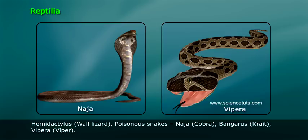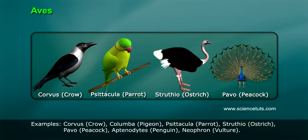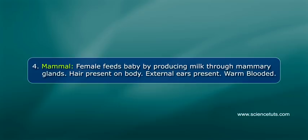Poisonous snakes include Naja (cobra), Bangarus (krait), and Vipera (viper). Aves: bones are pneumatic or hollow to reduce weight; forelimbs are modified into wings to assist in flying; warm-blooded. Examples include: Columba (pigeon), Psittacula (parrot), Struthio (ostrich), Pavo (peacock), Aptenodytes (penguin), and Neophron (vulture).